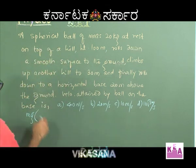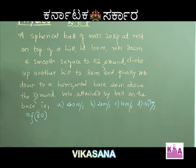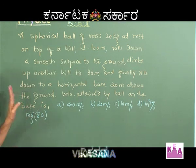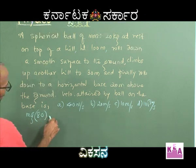It has descended through what height? 80 meters. So what is the work done by the gravitational force? mg into 80, and that is positive. There are no other forces which have worked on the particle.